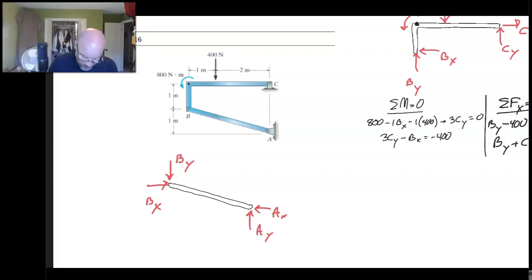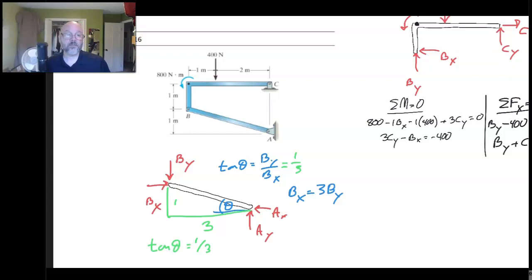Normally what we would do is we'd come in here and we would say that tangent theta is BY over BX. Now we don't know theta. Theta would be this angle in here. So how are we going to figure out what theta is? Well, I've got a triangle, it's three here and it's one here. We would say that the tangent of theta is one third. Well, you know what, we actually don't care what the value of theta is. So let's just save the calculator and come up here and say that this is one third, which gives us a relationship that says BX is 3 BY. And now it turns out, now we're in business.